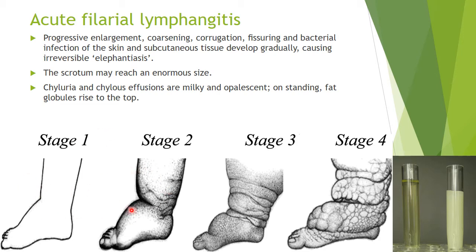There is progressive enlargement, coarsening, corrugation, fissuring, and bacterial infection of the skin and subcutaneous tissue, developing gradually and causing irreversible elephantiasis through stages one, two, three, and four. The scrotum may also reach an enormous size. Chyluria can occur, with fat globules present in the urine making it milky and opalescent, with the fat globules rising to the top.